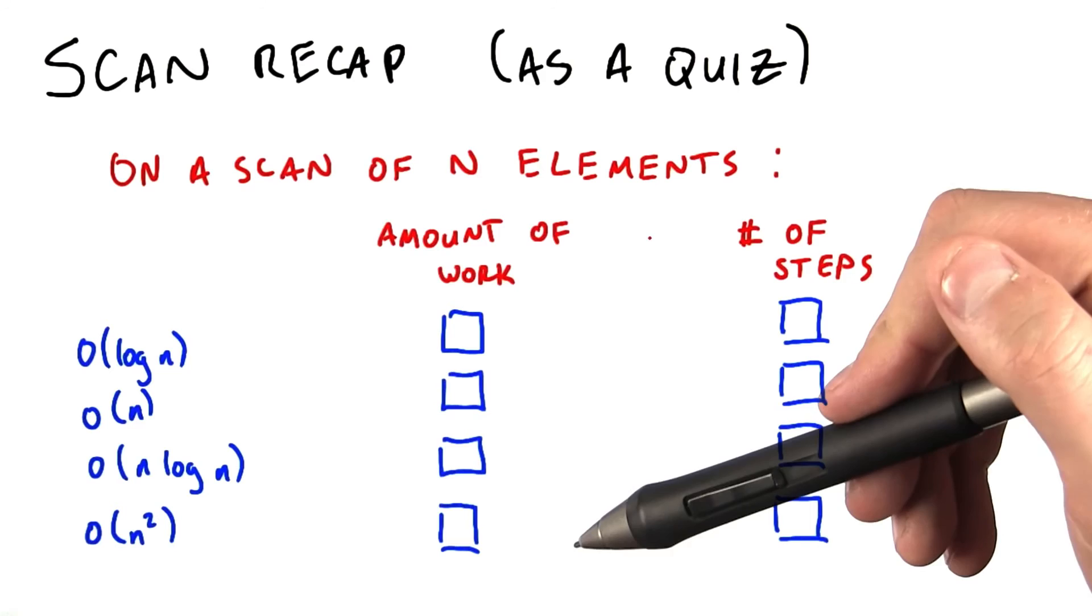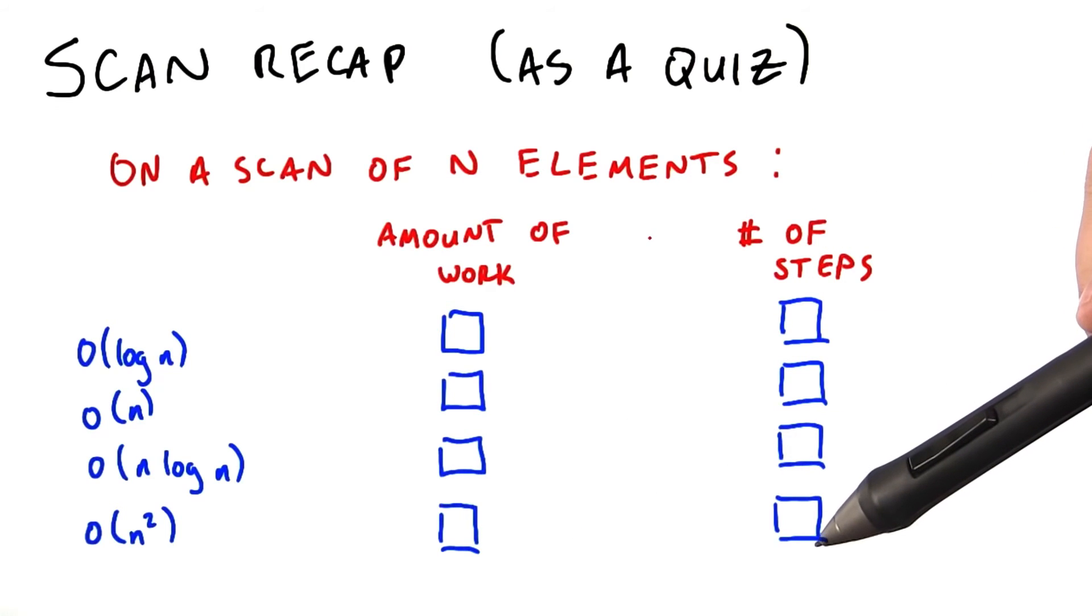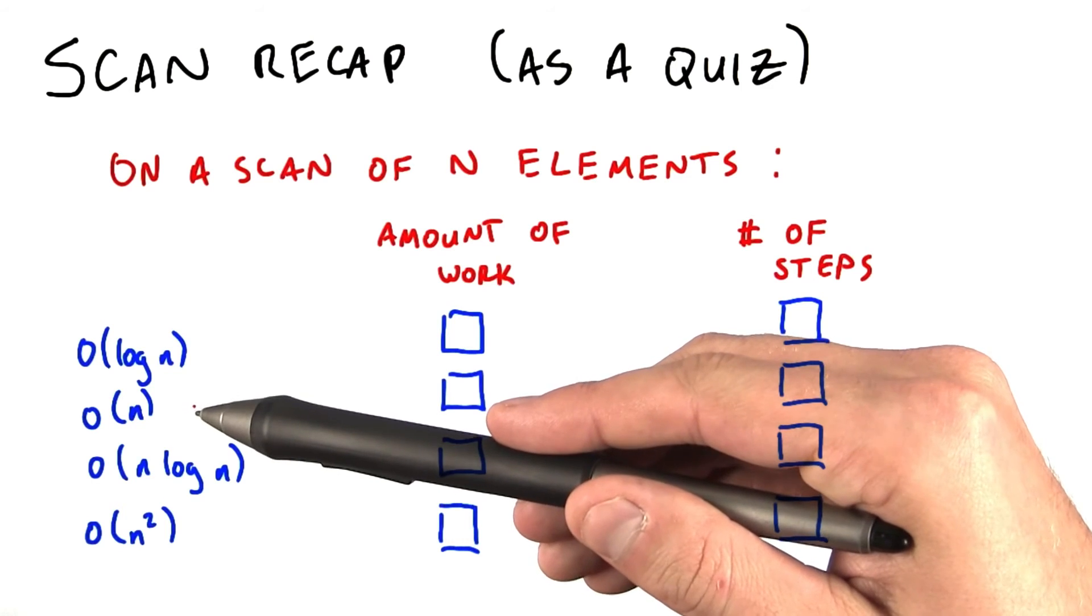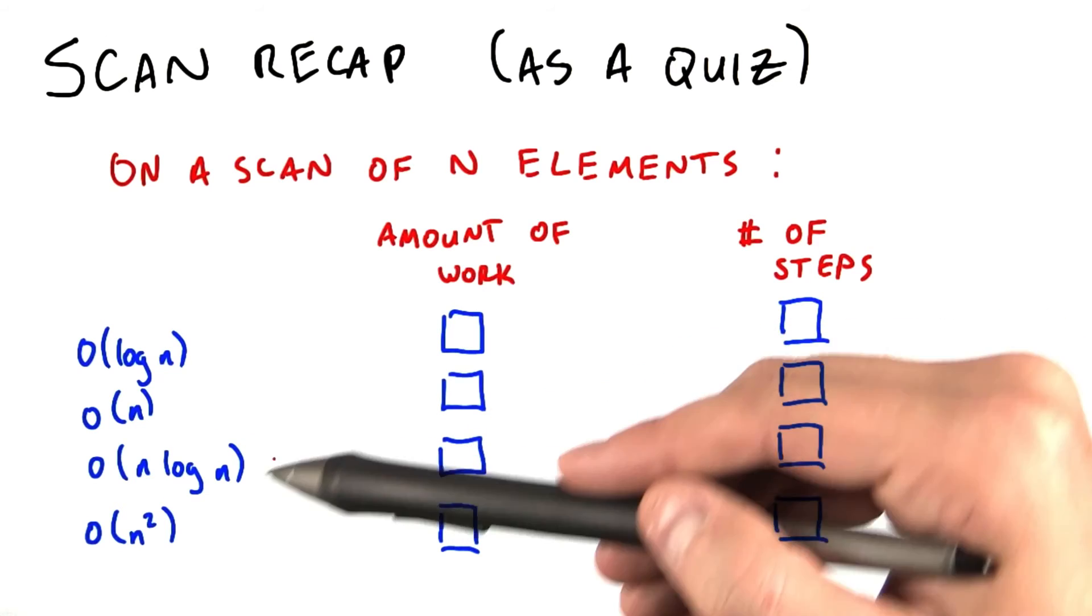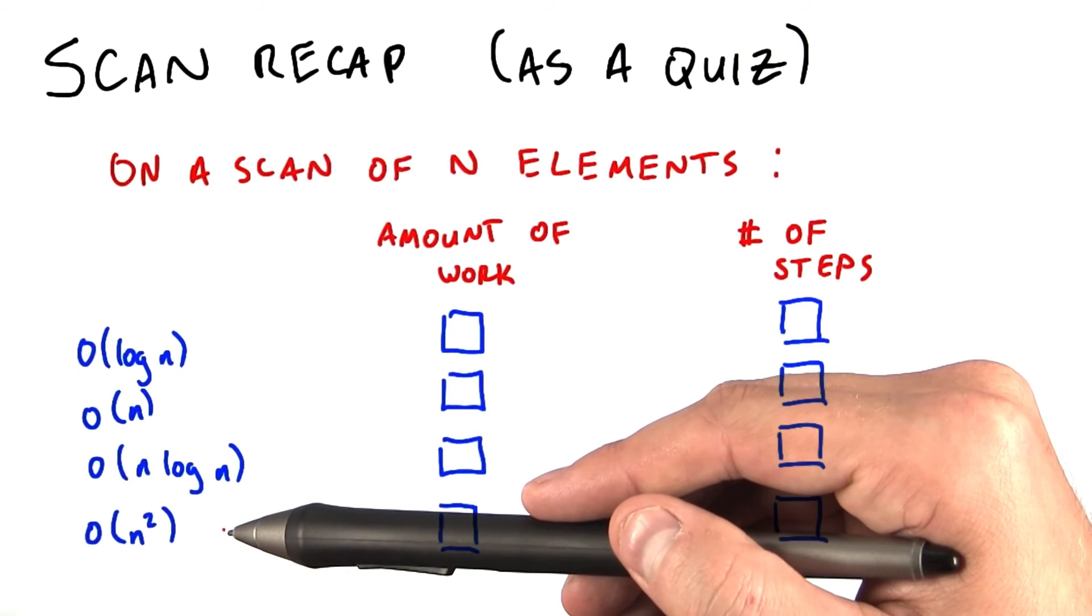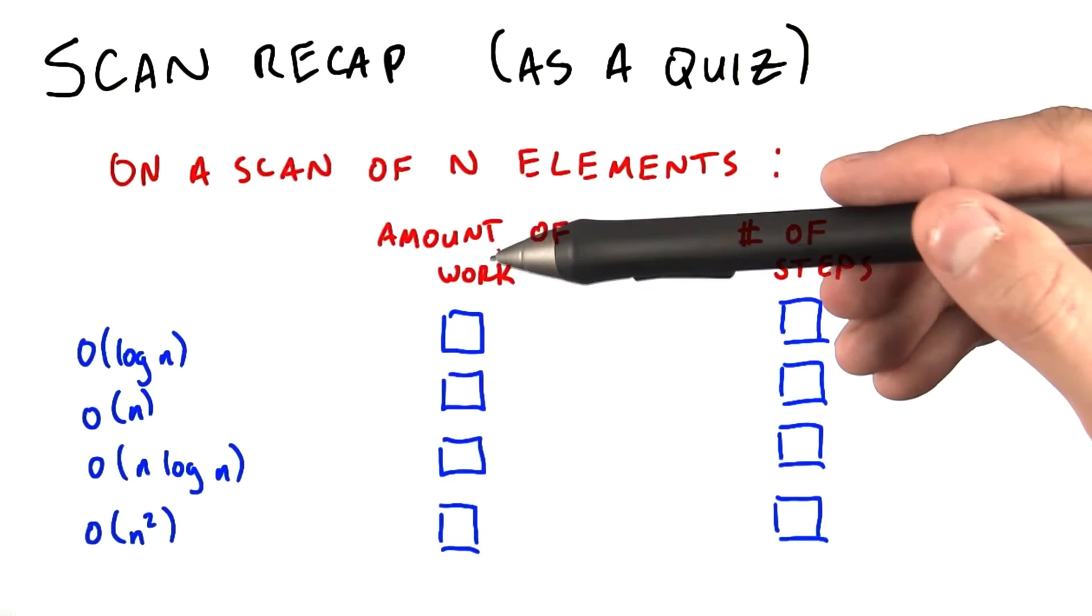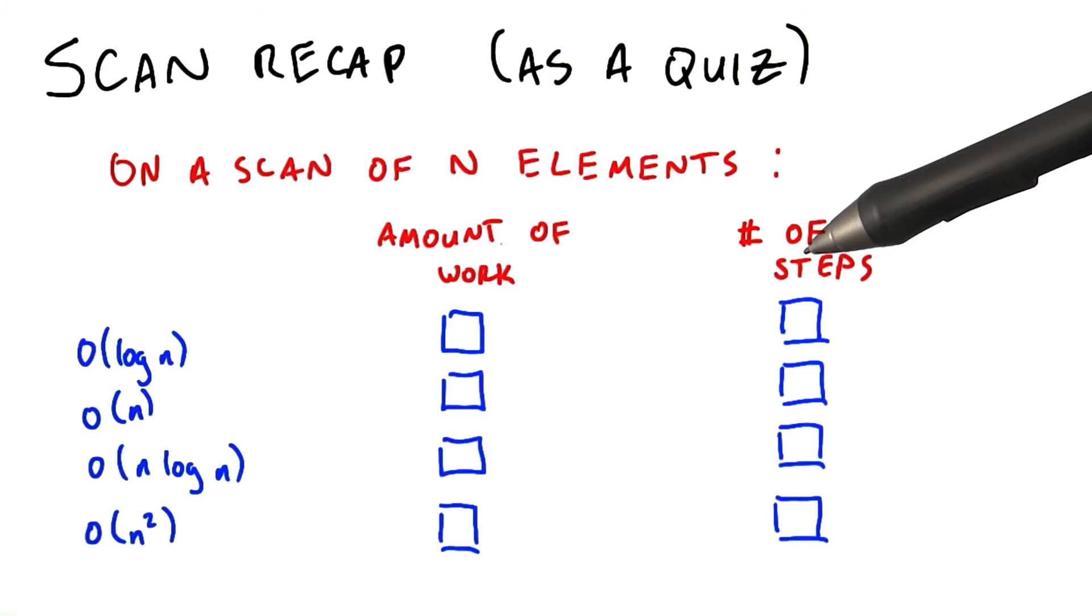And what is the number of steps to do the scan? Your choices are proportional to log n, proportional to n, proportional to n log n, and proportional to n squared. So we'd like you to check the box that corresponds to what the work complexity of the algorithm is, and what the step complexity of the algorithm is.